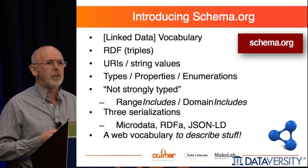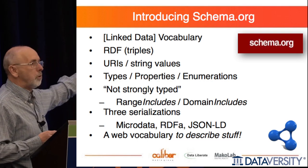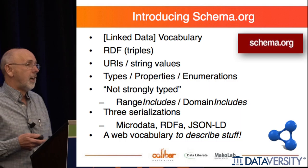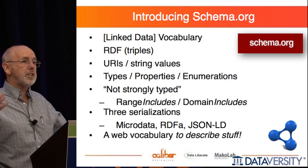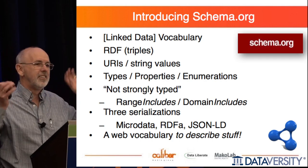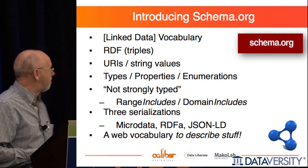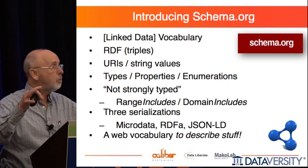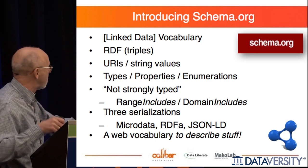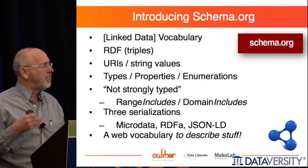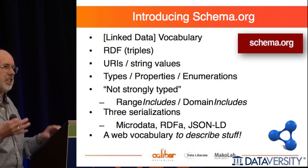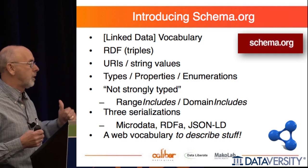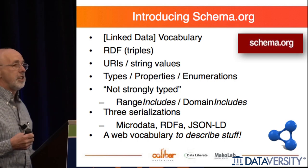So what is schema.org? It's a linked data vocabulary using RDF triples, using URIs and strings. The reason schema.org doesn't shout about linked data is because to most webmasters and web designers, the semantic web is scary and they'll never catch on. So we keep away from that language. It has types — we refer to types rather than classes — properties, and enumeration values. For those into RDF and ontology, note that it's not domain and range but rather range and domain includes, hinting at relationships rather than asserting them. It has three serializations: microdata, RDF-A, and JSON-LD.